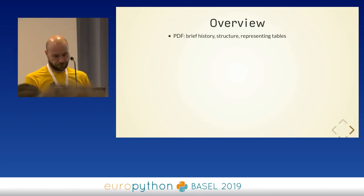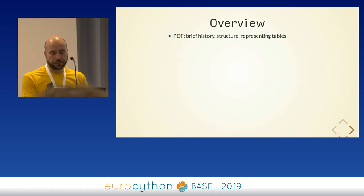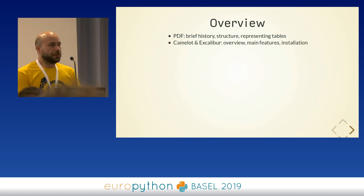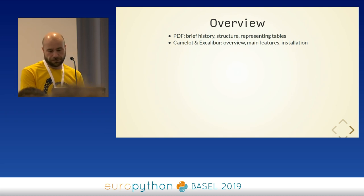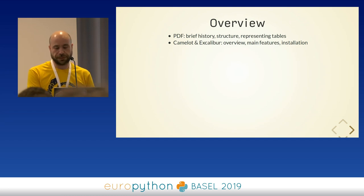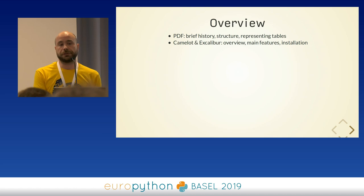Let's start with a quick overview of what this talk will be about. First, we'll have a brief history of the PDF portable document format and its internal structure, specifically how tabular data is represented and why it's hard to extract such data. Then on to Camelot and Excalibur, which is the main focus of this talk. I'll list the features those libraries make available and why it's so easy to use them to extract tabular data and get control over the extraction process.